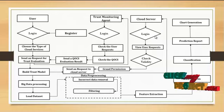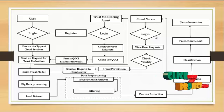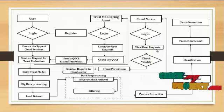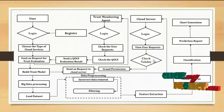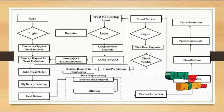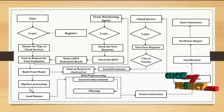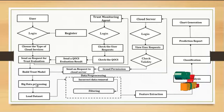After receiving the report from the trust monitoring agent, the user will send a request to the cloud server for processing big data on the cloud. The cloud server will log in using the username, password, and secret key. After login, it will view all user requests to process big data on the cloud, check the validity of the user and the data, and then grant permission to the user.